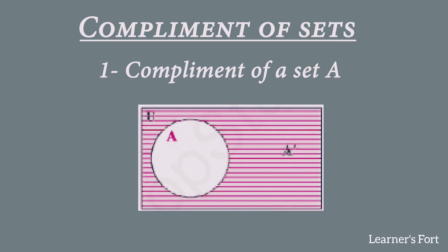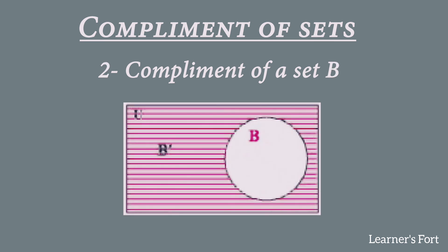In the second picture, we take the complement of set B. The circle of set B is drawn inside the rectangle, and the shaded portion is the entire universal set rectangle excluding the circle of set B. This represents all the elements of the universal set that are not part of set B — which is the complement of B. This concludes today's lecture. Take care and bye-bye.